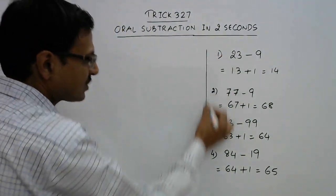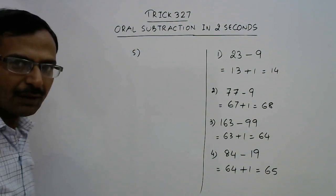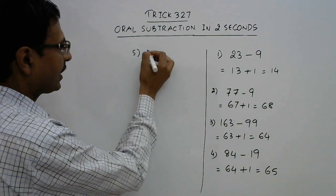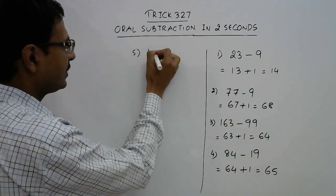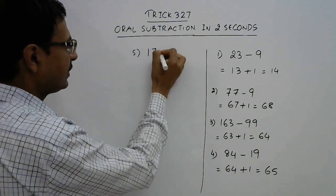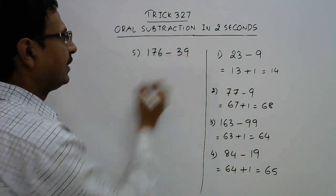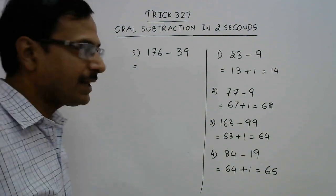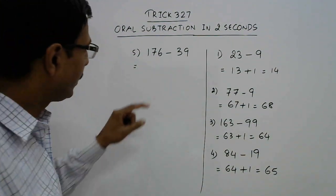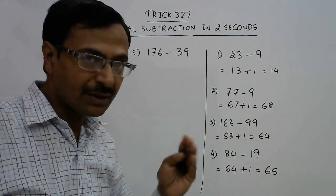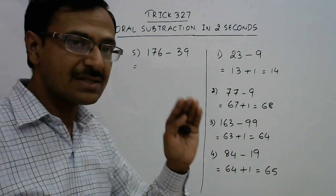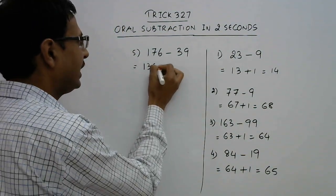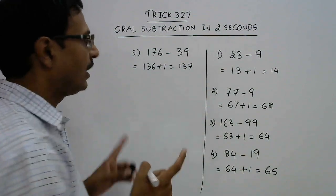Let us change the base quantities again. This time we have 176 and we need to subtract 39. Now 39 is close to 40, so instead of subtracting 39, we subtract 40. So 176 minus 40 — that can be done in mind — gives 136, and just add 1, you get 137 as the answer.